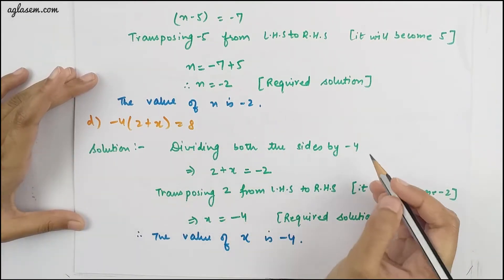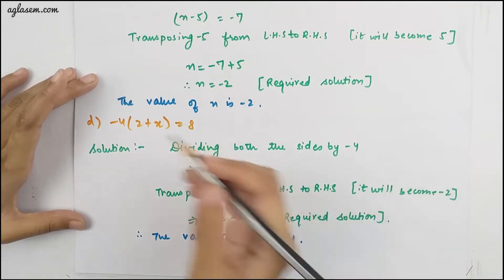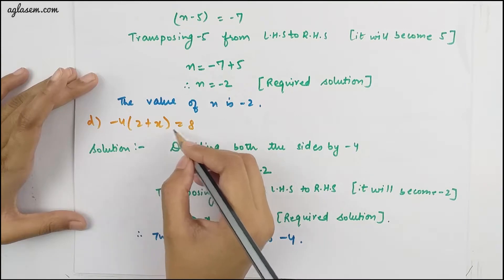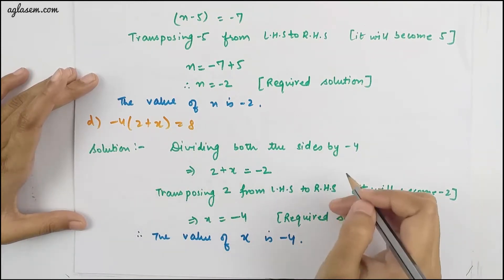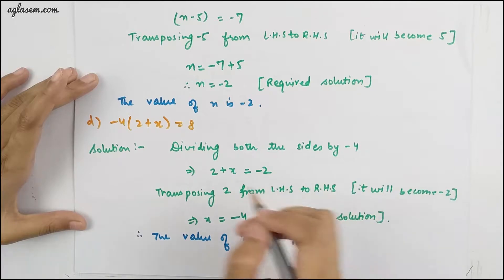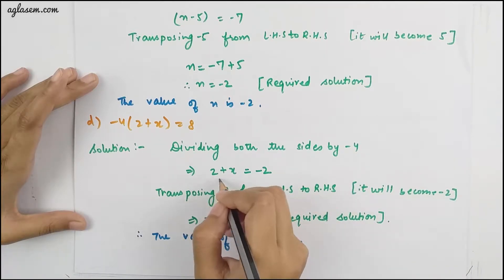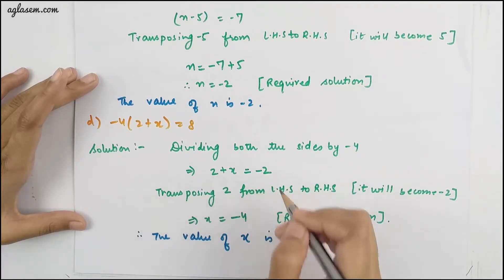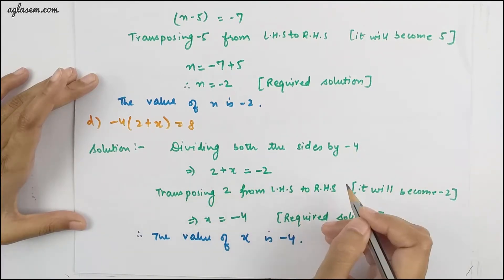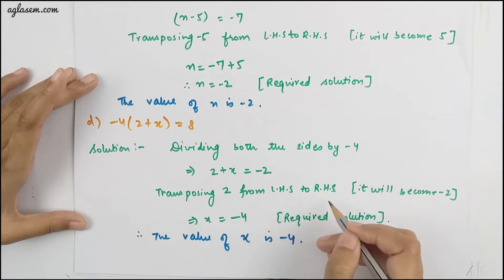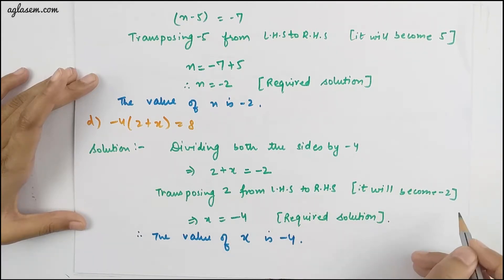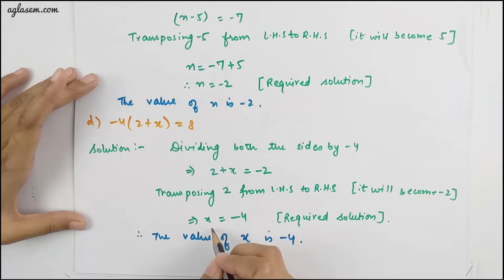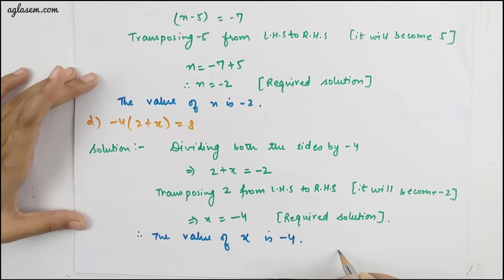The D part is −4(2 + x) = 8. Dividing both sides by −4, we have 2 + x = −2. Transposing 2 from LHS to RHS, it becomes −2. From there, we have the value of x = −4.